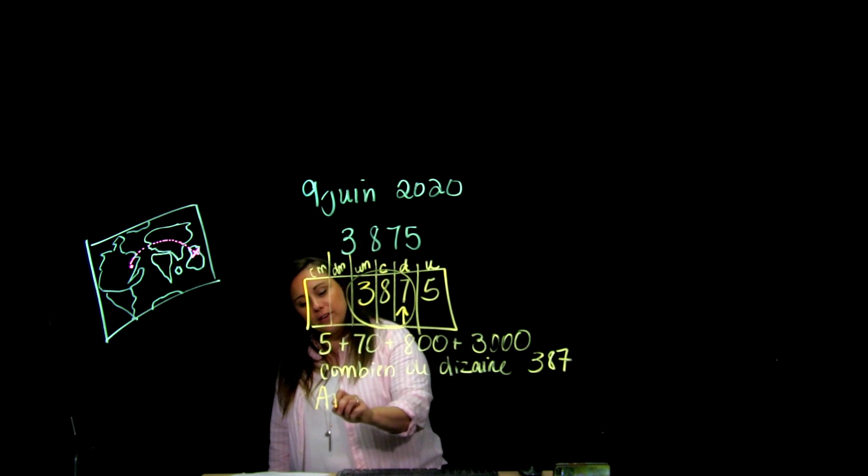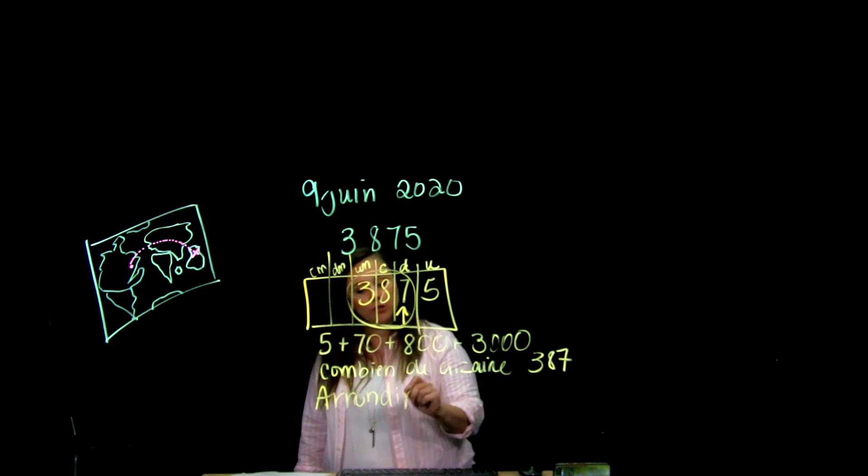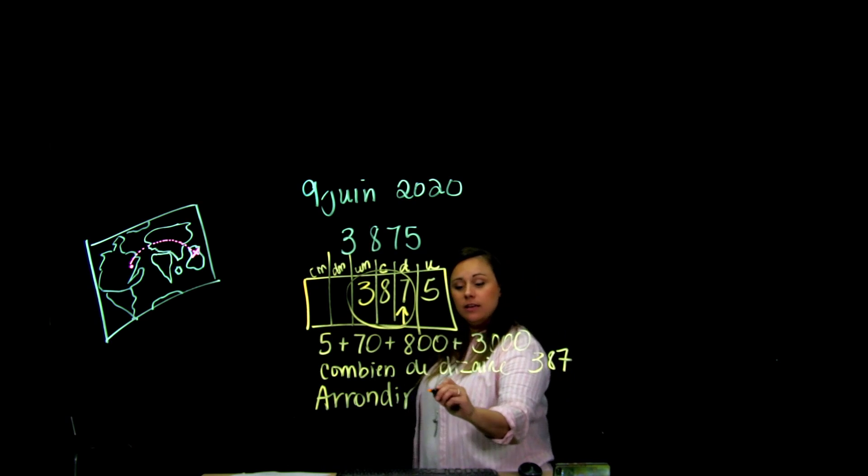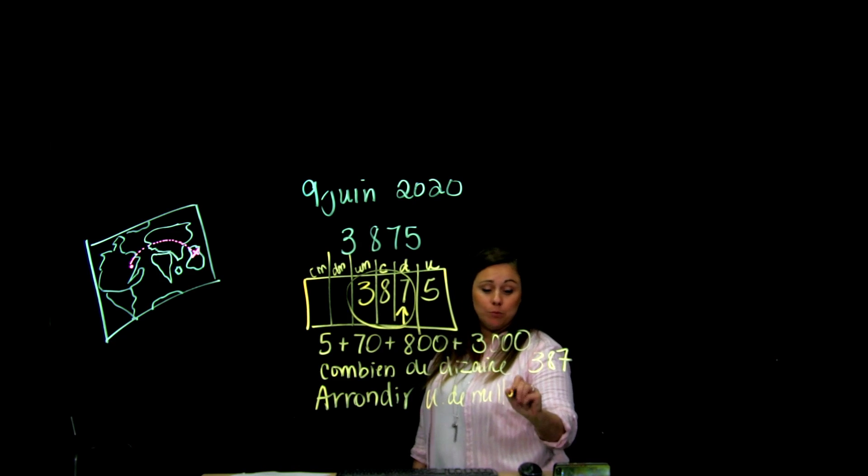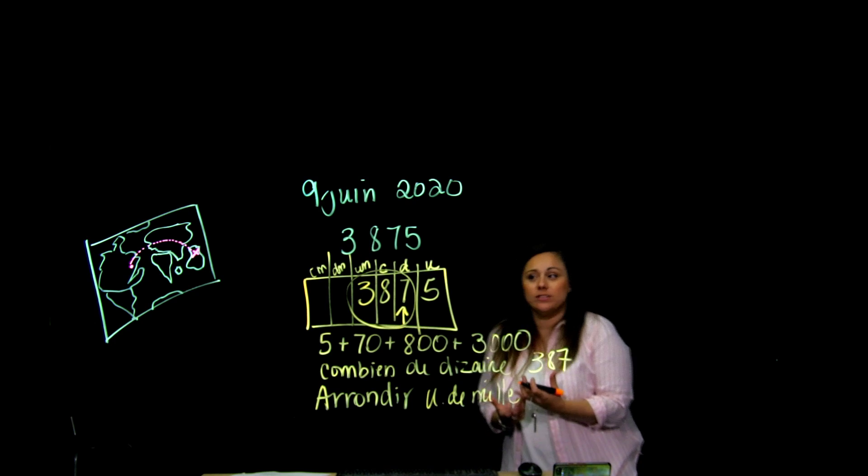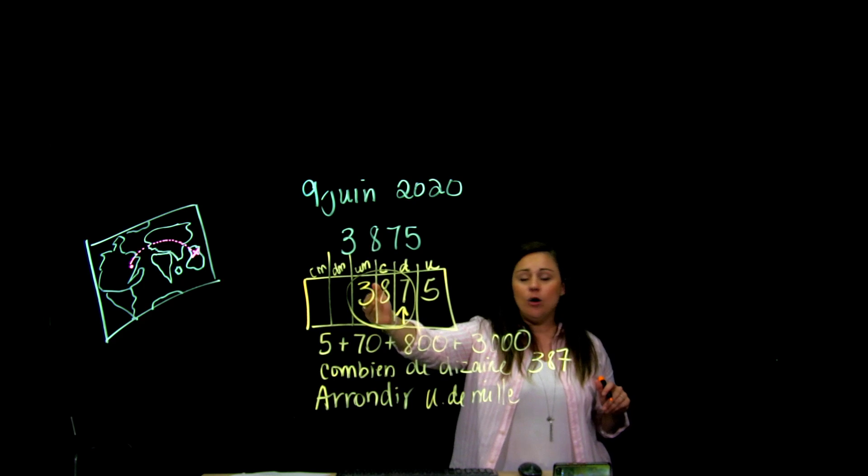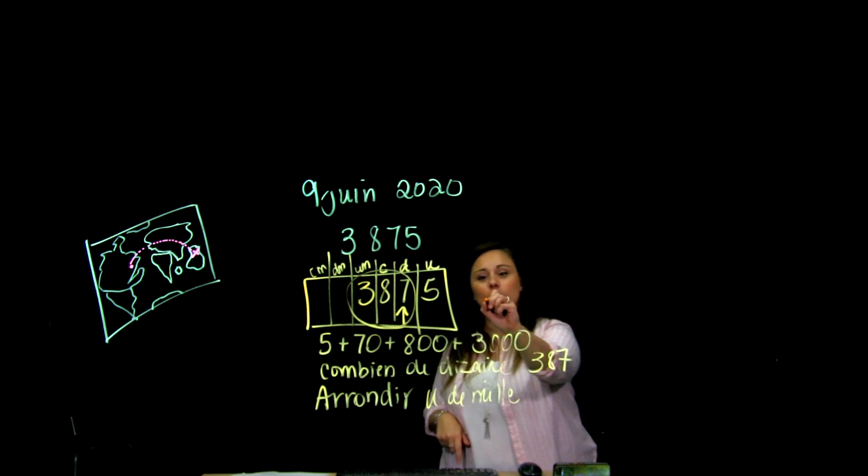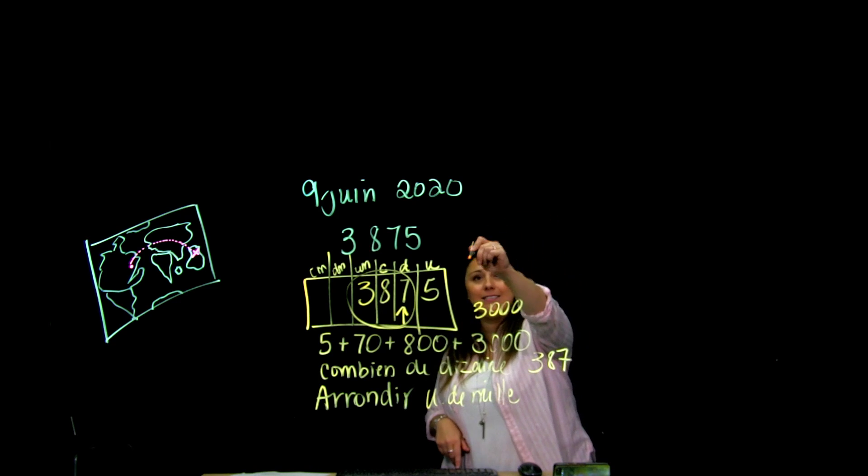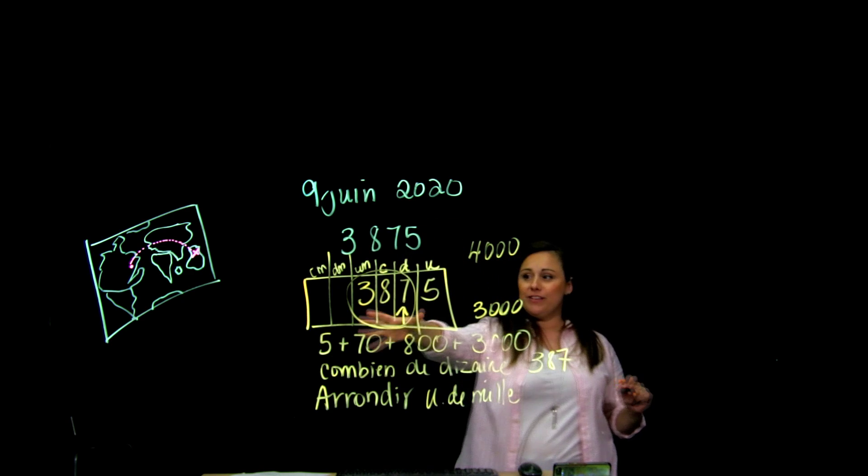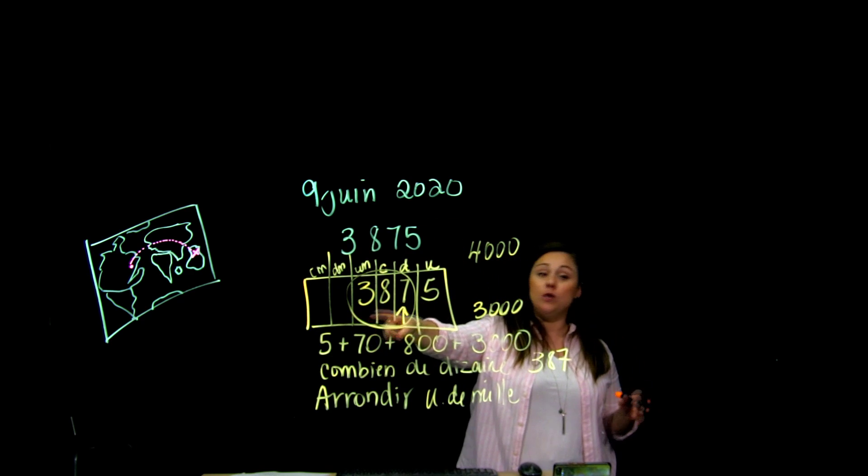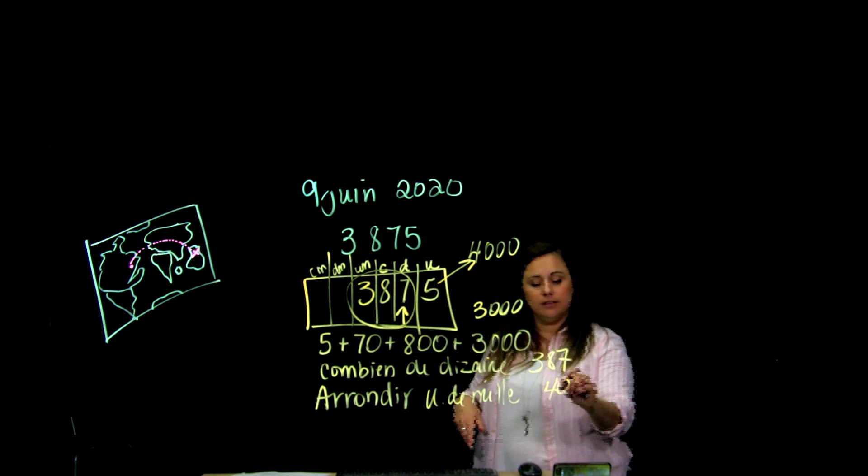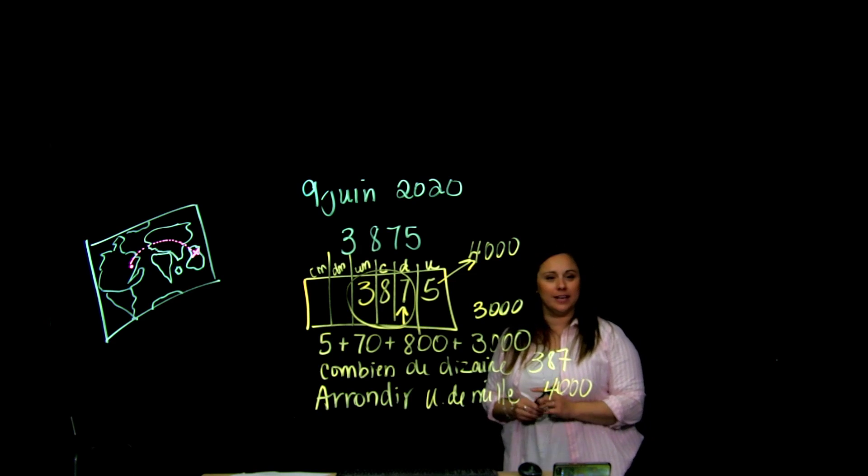Maintenant, je t'avais parlé d'arrondir. Faisons-le avec ce nombre. Alors, j'aimerais que tu arrondisses à l'unité de 1 000. Pour savoir quelle unité de 1 000 on doit arrondir, on repère notre position et on regarde est-ce qu'il est plus proche de l'unité de 1 000 précédente ou la suivante. Dans ce cas-ci, est-ce que c'est plus proche de 3 000 ou 4 000? J'ai 3 800, 3 900, puis après j'arrive à 4 000. Donc, c'est beaucoup plus proche de 4 000. Donc, c'est 4 000 pour arrondir.